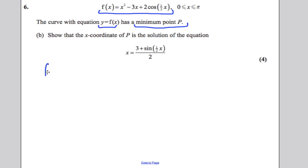So the first thing is we have f of x is equal to x squared subtract 3x plus 2 cos of a half x. In order to find a minimum, you have to differentiate first. Do not go ahead and make it equal 0. Firstly, state for a mark what the derivative is.